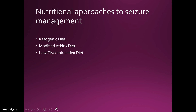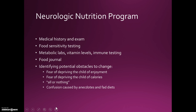There are currently three dietary therapies known to be effective for seizure control: the ketogenic diet, the modified Atkins diet, and the low glycemic index diet. An approach to nutrition to optimize neurologic function begins with several components of the medical history and exam, potentially food sensitivity testing, a variety of other tests, a food journal, and identifying potential obstacles to change.